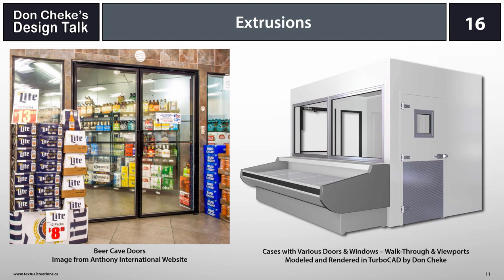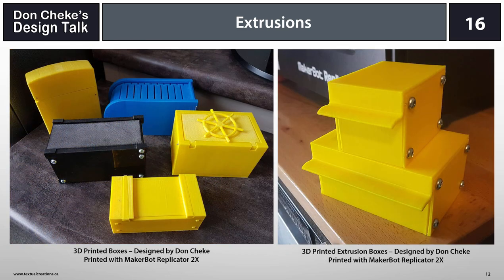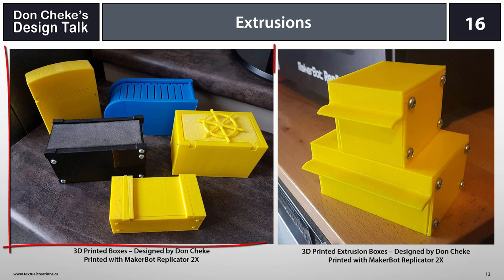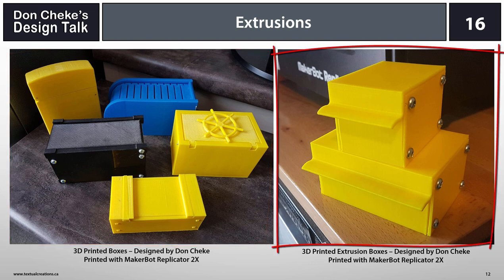One of the things we produced using extrusions was a resizable electrical box, used on walk-through doors like those found on beer caves in liquor stores. Since these doors use perimeter heat in the frames and rails, a surface-mounted electrical box is required for connection and safety needs. This electrical box was the inspiration for the 3D printed box I decided to make, similar to other boxes shown in previous design talks.